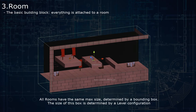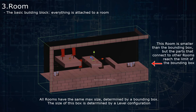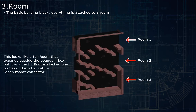Rooms within a level must all fit within a specific bounding box, and this bounding box size is determined by the level. So the rooms should not expand outside of that bounding box, but they can be smaller, as long as their room connectors reach the limit of the bounding box — so when you connect two rooms together, there is no gap between them. You can create rooms that are bigger than what the bounding box would normally allow by creating small rooms that you attach together with an invisible room connector, giving the illusion of a bigger room.